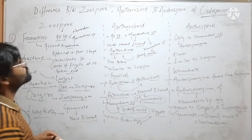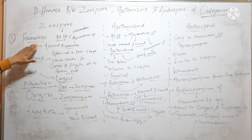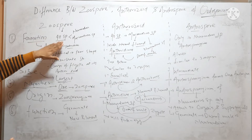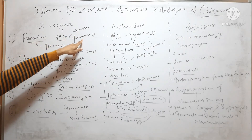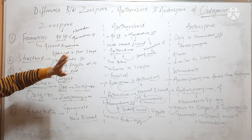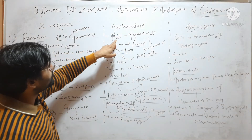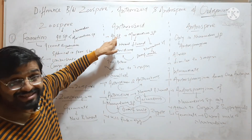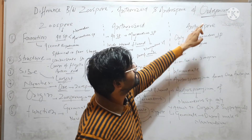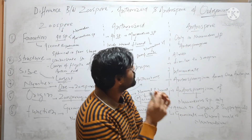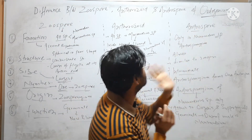To summarize the difference between Zoospore, Antherozoid, and Androspore: Zoospores are formed in all species — both Macroandrous and Nanoandrous. Antherozoids are also produced in all species. But Androspore is only produced in Nanoandrous species.